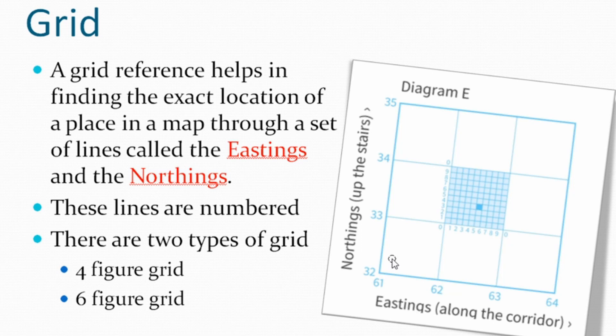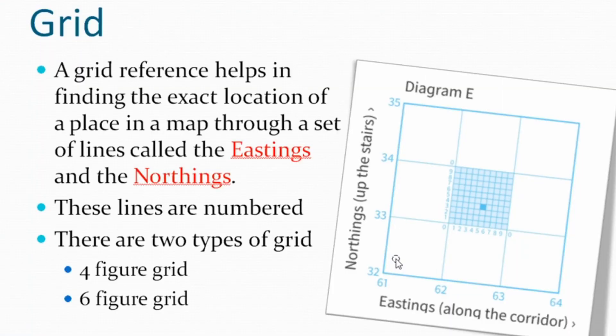Now we'll move to grid. Grid is very important in the topographical map. For this topographical map you will almost get four to five marks just for finding the grid — out of twenty, almost four to five marks. Now what is grid? A grid reference helps in finding the exact location of a place in a map through a set of lines called the Eastings and the Northings. Now when I say Eastings and Northings, that is where children make mistakes — they are not clear about what is Easting and what is Northing. If you get mixed up you won't get any marks.